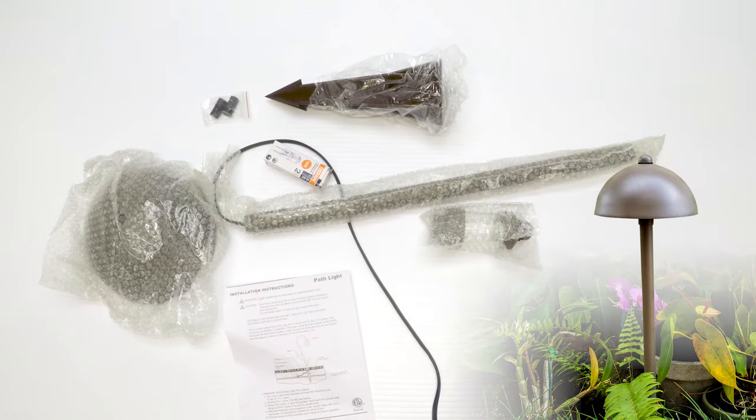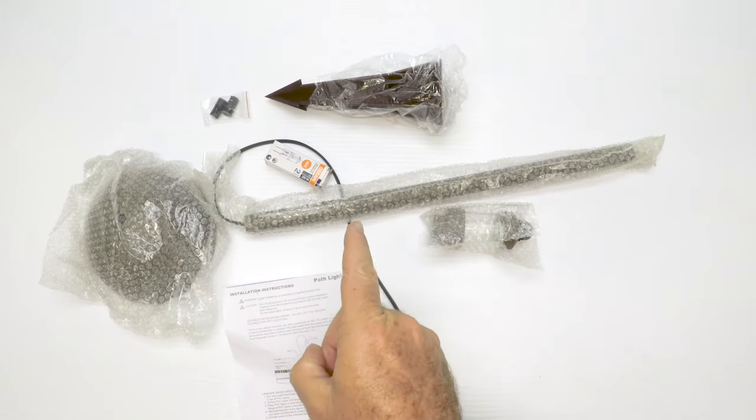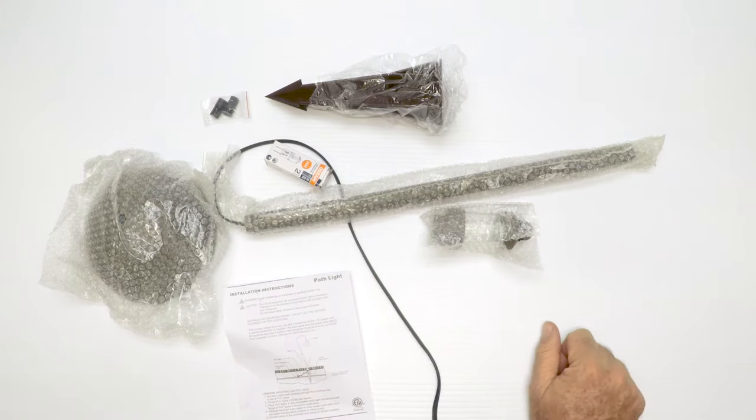Today we're going to look at the S225 path light, here it is right out of the box. But before we get to it, I want to show you some photos that I took out in my yard so you can get an idea how it looks in action. It looks pretty good, we really like this fixture and it's very popular with most of our customers.